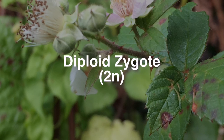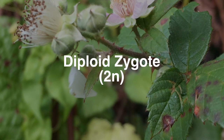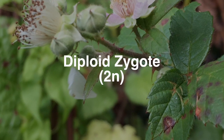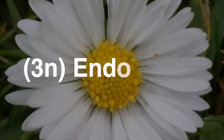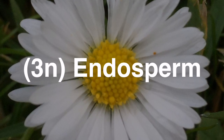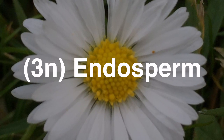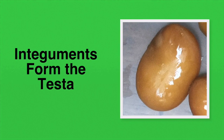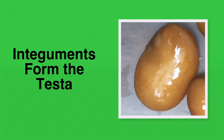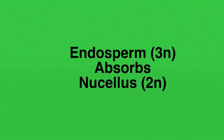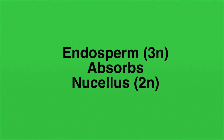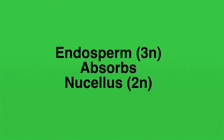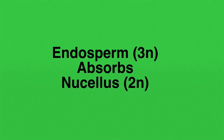The first fertilisation event resulted in the formation of the diploid zygote, which became the embryo plant. The second fertilisation event resulted in the formation of the triploid endosperm. The walls of the ovule, otherwise known as the integuments, become the testa — the outer coating of the seed. The endosperm absorbs the nucellus, which was made up of diploid cells that provided nourishment to the developing ovule.